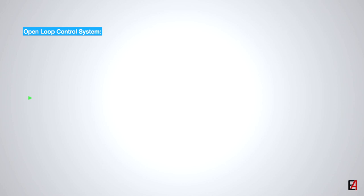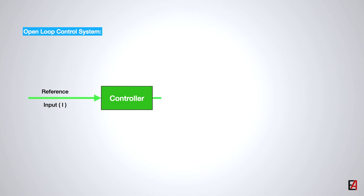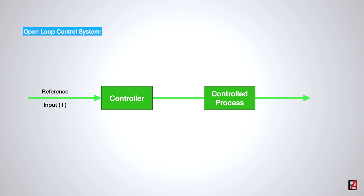The block diagram here represents the open loop control system or non-feedback control system. An input signal or command is applied to the controller, whose output acts as the actuating signal that regulates the control process and drives the control variable to the desired value.